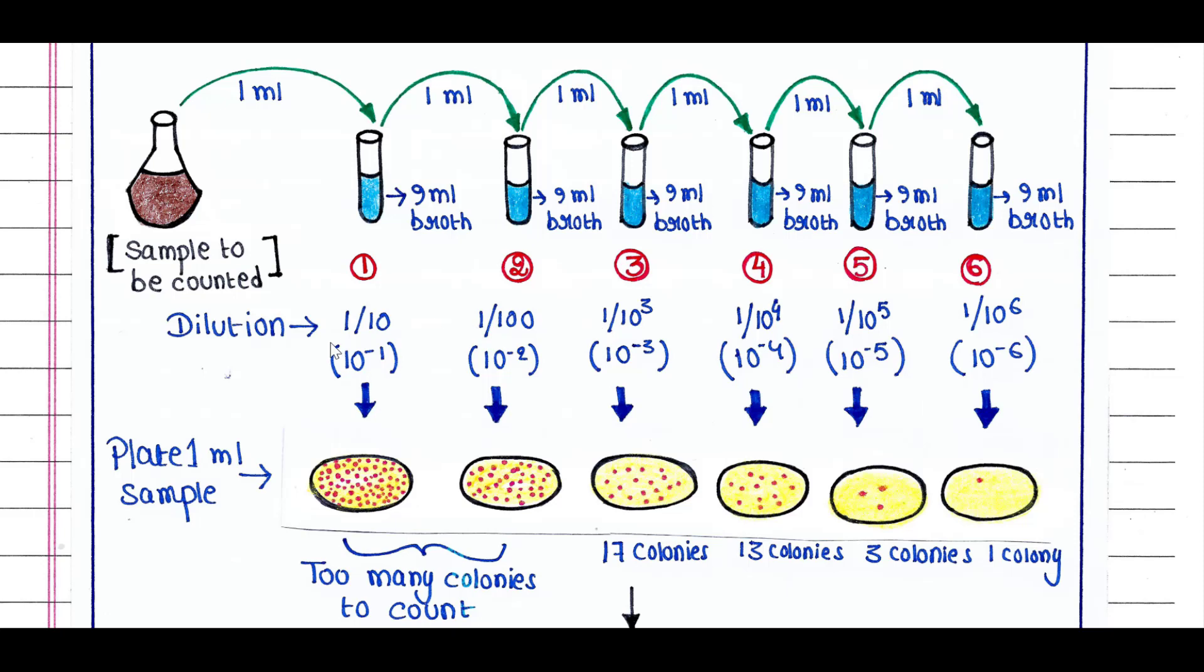Next, we will plate them in petri dishes to generate colonies. From each tube, we will take 1 ml culture and put it in petri dishes.